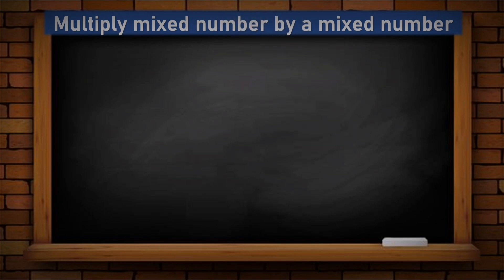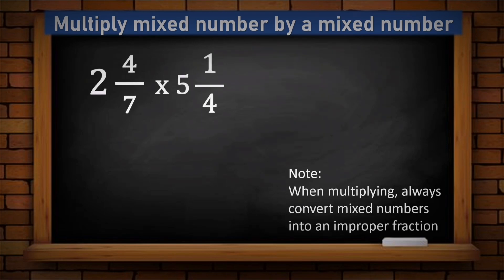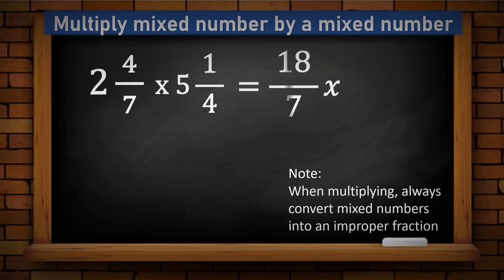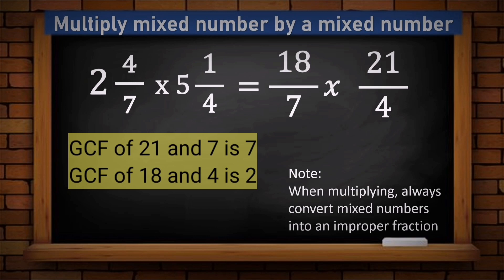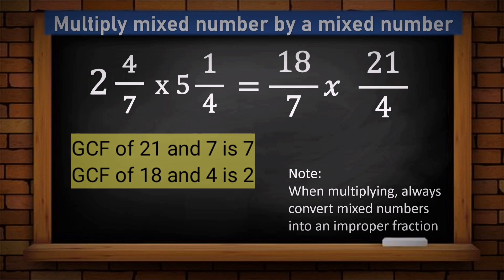Example number four: multiply a mixed number by a mixed number. Given two and four sevenths times five and one fourth. Convert both to improper fractions: seven times two is fourteen, fourteen plus four is eighteen — giving eighteen over seven. Four times five is twenty, twenty plus one is twenty-one — giving twenty-one over four. Now, twenty-one and seven have a common factor, and eighteen and four also have a common factor. Divide twenty-one by seven and seven by seven; divide eighteen by two and four by two.